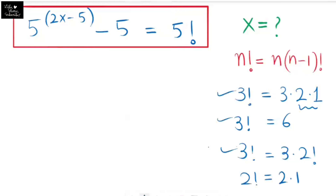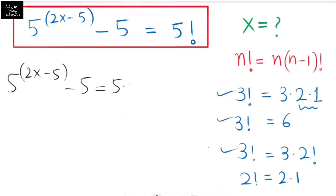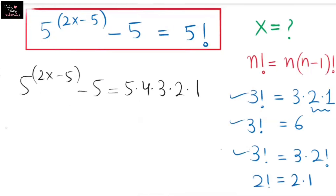Now I'm going to write the factorial of 5. We have 5 to the power of 2x minus 5, minus 5, is equal to 5 factorial, which is 5 times 4 times 3 times 2 times 1.